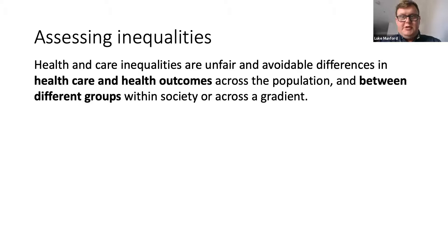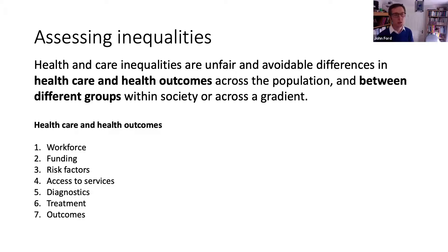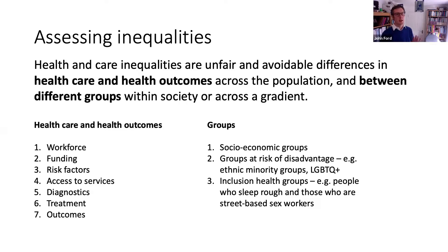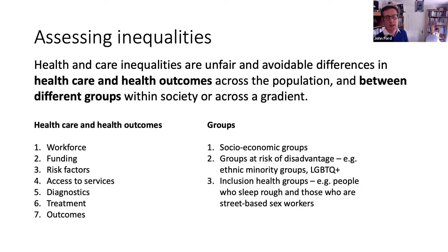Second, assessing health inequalities — taking a data-driven approach. Locally we've come up with seven different outcome areas, mapped onto groups: we've looked at health inequalities across things like workforce, funding, and risk factors, and across three different groups — socioeconomic groups, disadvantaged groups such as minority ethnic groups and LGBTQ+ groups, and inclusion health groups. This allows us to take a systematic and logical approach, produce indicators, and monitor them over time.